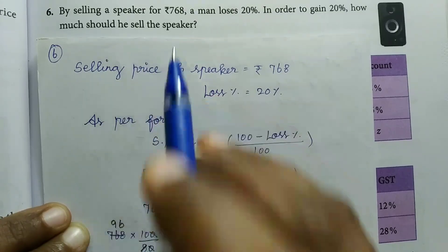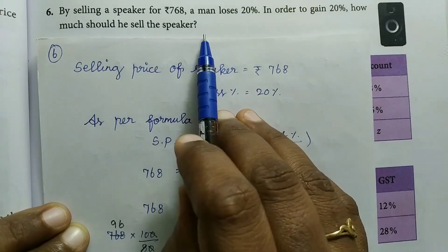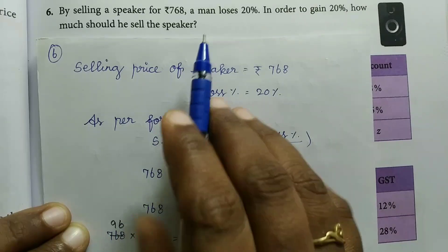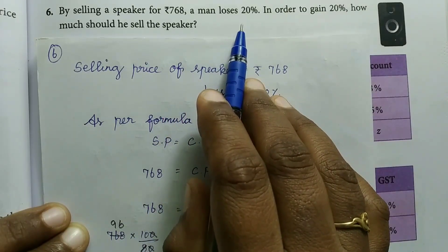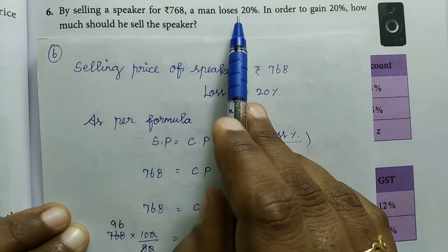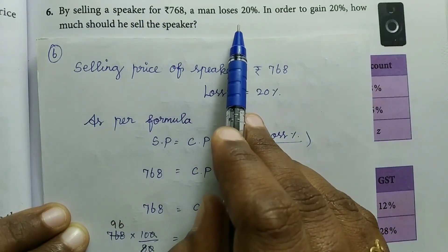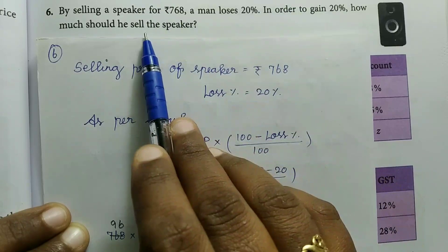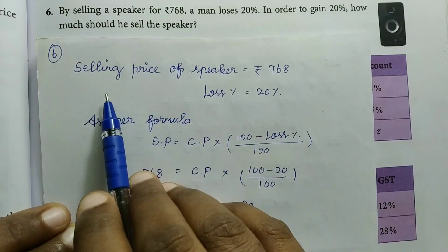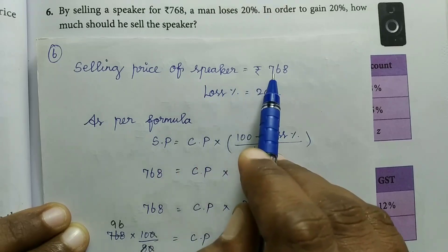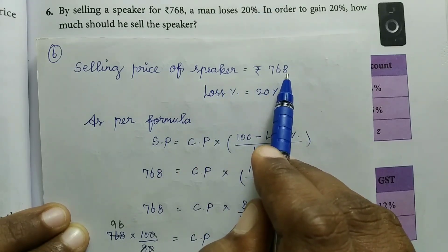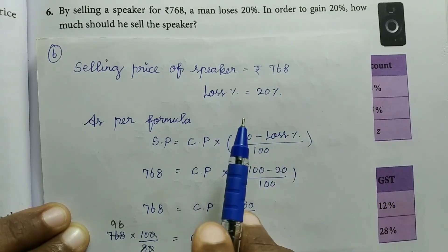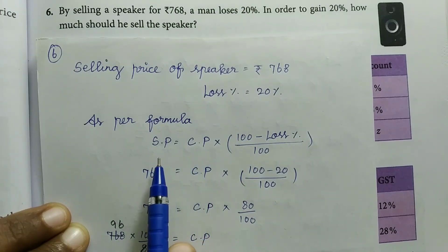So we need to find the cost price first. If you know the selling price of the speaker and the percentage of loss, we will find the cost price. Then based on the cost price, we will find the selling price for 20% gain.